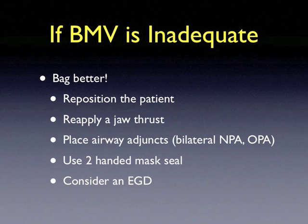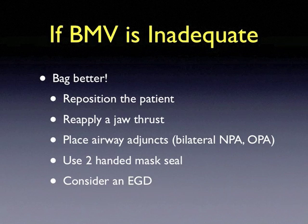Reposition the patient — you may want to ramp up their shoulders with blankets or sheets to improve their airway axis. Reapply a jaw thrust and don't forget the airway adjuncts: bilateral nasopharyngeal airways and an oropharyngeal airway. If two providers are available, use a two-handed mask seal. You can also consider placing an extraglottic device or intubating the patient.